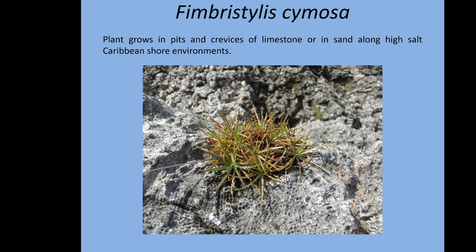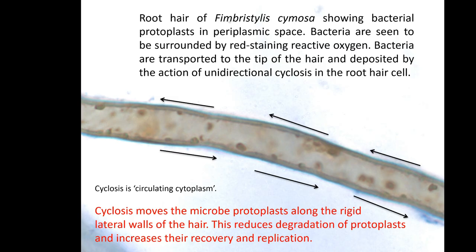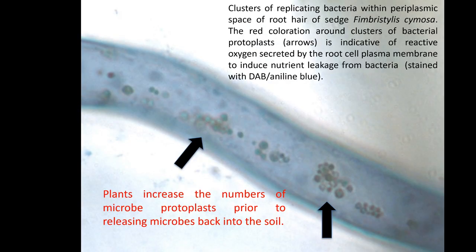This sedge grows on rocks with almost no nutrients but has lots of these microbes. In the hairs of the sedge, these little red areas are the microbes outside the cell. Through cyclosis — the churning of the cytoplasm — the microbes are constantly moved around and broken apart: where there was one, it breaks into many small ones, replicating internally. The big clusters are old, the small ones are young.